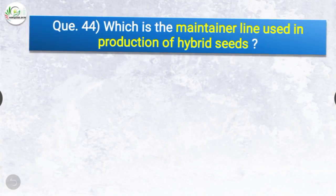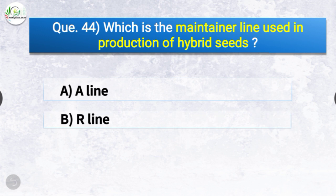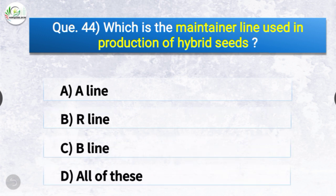Question number forty-four: Which is the maintainer line used in production of hybrid seeds? The options are A line, R line, B line, or all of these. The correct answer is option C — B line. B line is the maintainer line used in production of hybrid seeds.